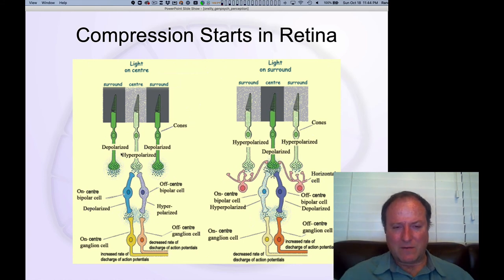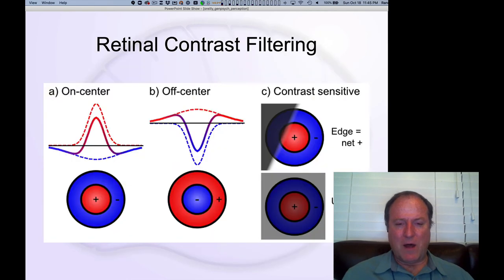The bottom line is there's this pattern of connectivity that produces what we call on-center, where the neurons coming out of the retina going up into the thalamus - what we call the retinal ganglion cells here at the bottom - those are detecting a little region of bright light surrounded by dark light. And then you have similarly the opposite case.